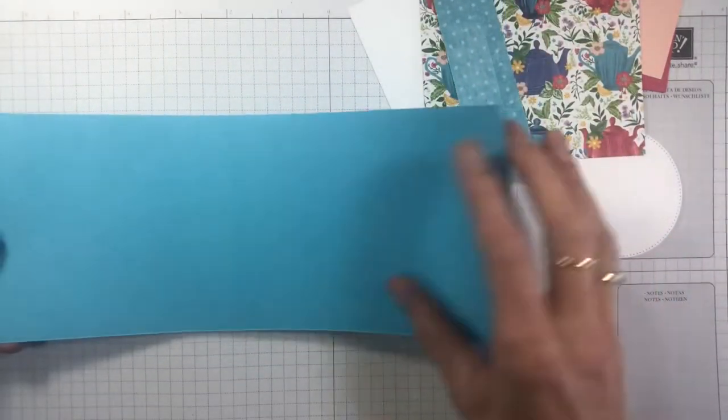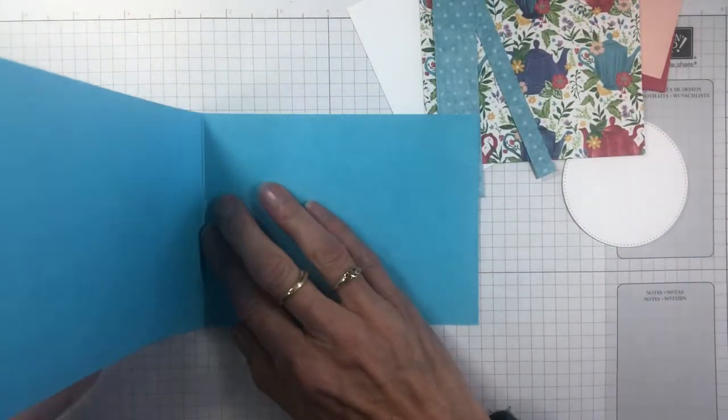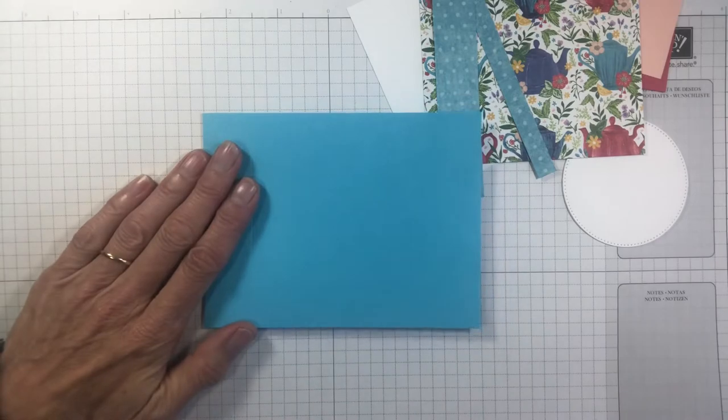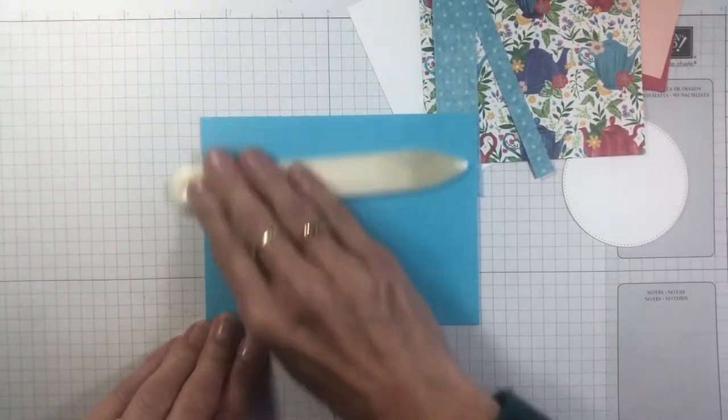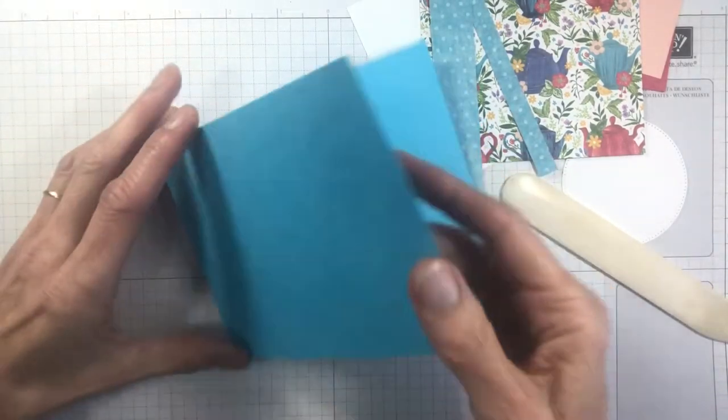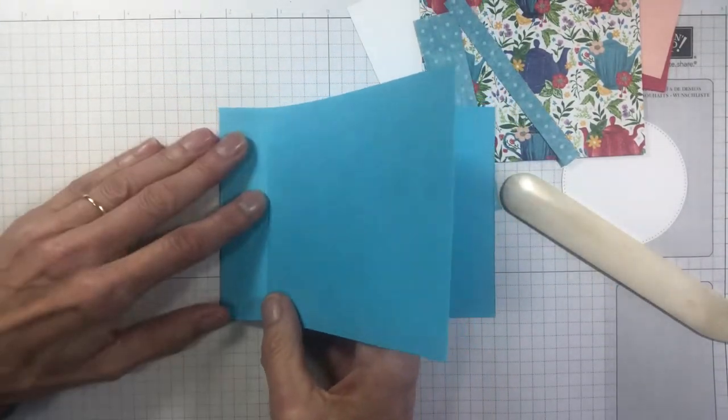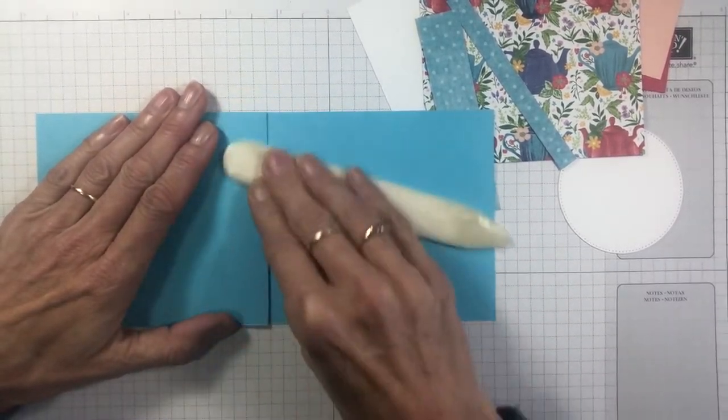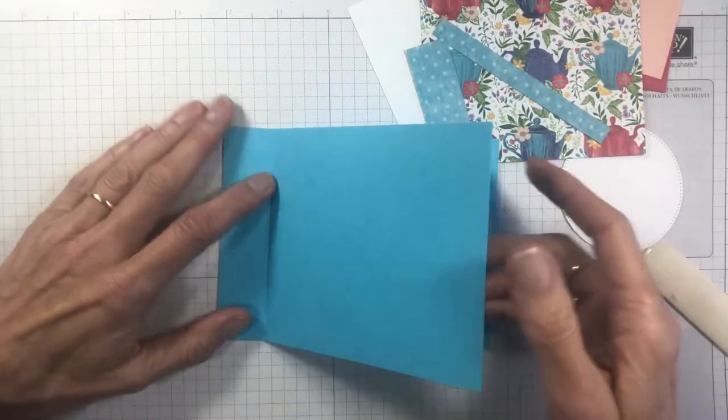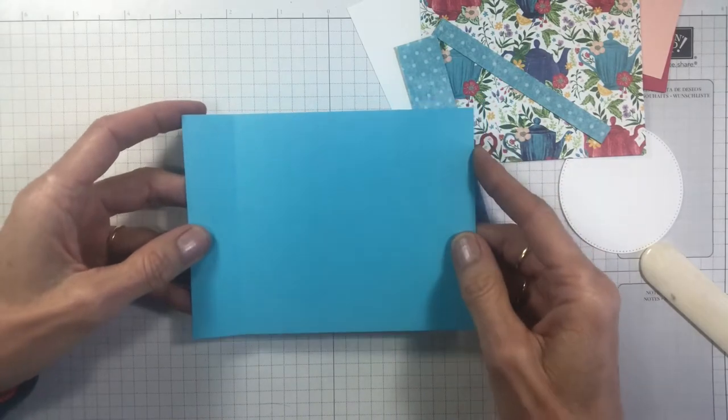Taking your base card, you want to fold that on your score lines. Just grab your bone folder and give it a rub along the spine there and fold this one on the edge back. So that's your basis of your card.